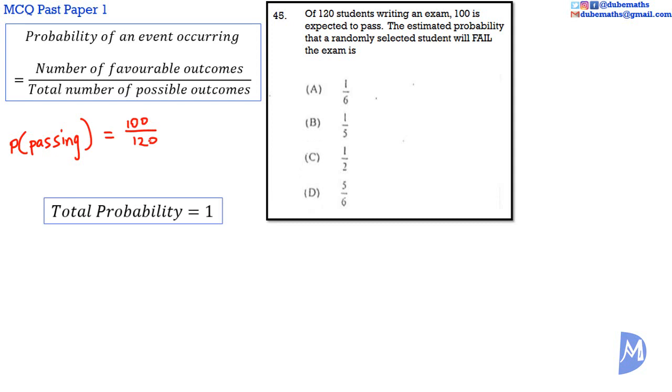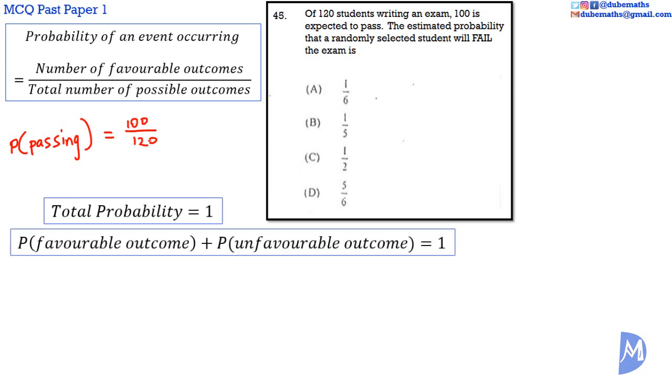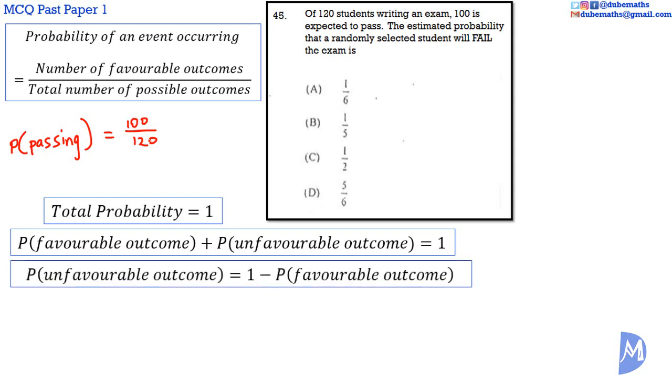Total probability is equal to 1. The probability of a favorable outcome added to the probability of the unfavorable outcome is equal to 1. That is, the probability of passing added to the probability of failing will add to 1. It follows that the probability of failing is equal to 1 minus the probability of passing.